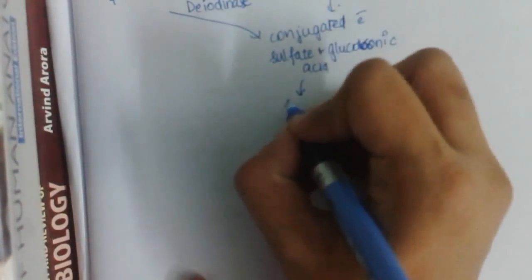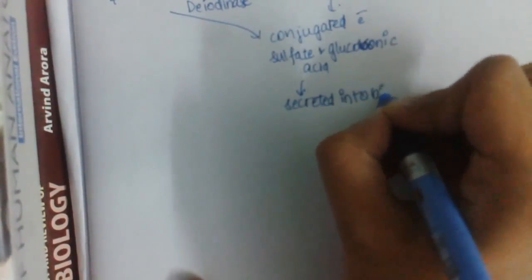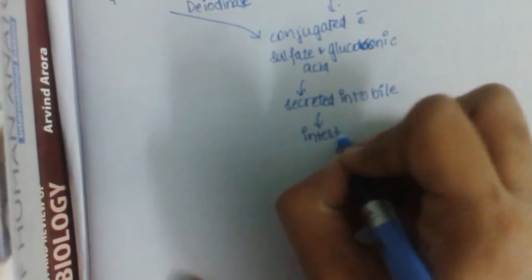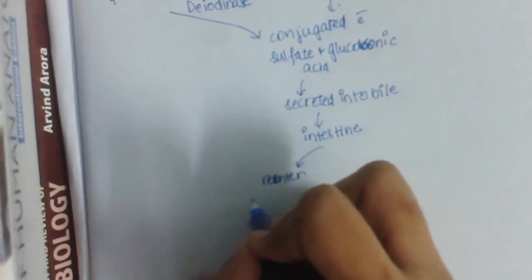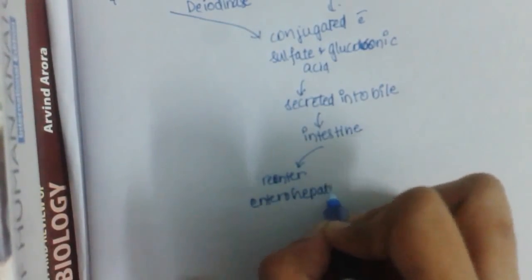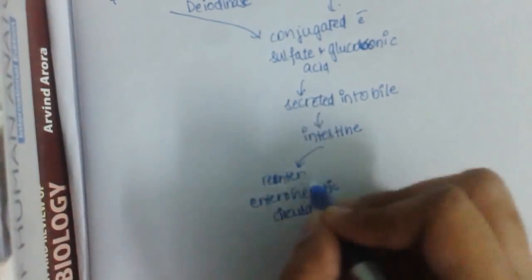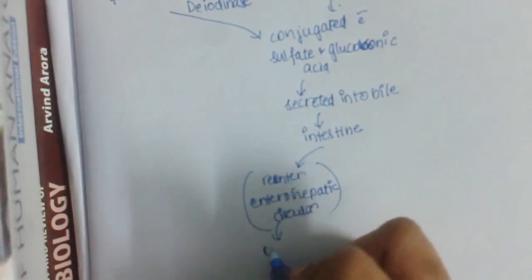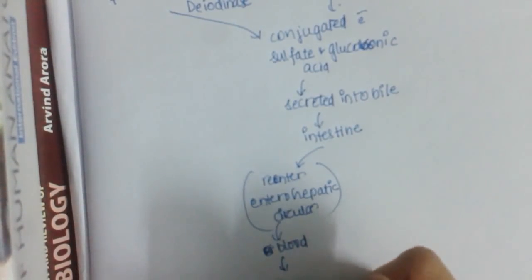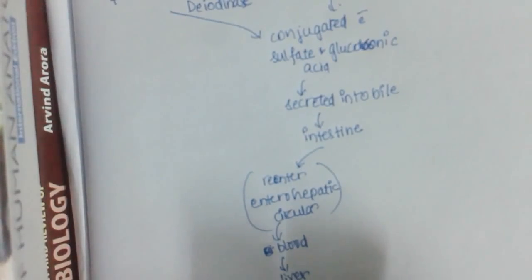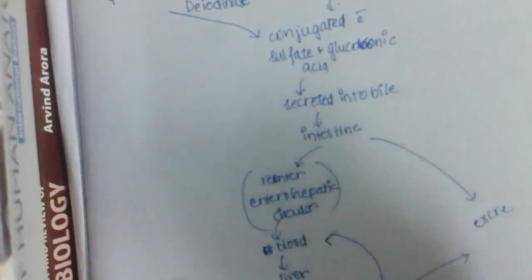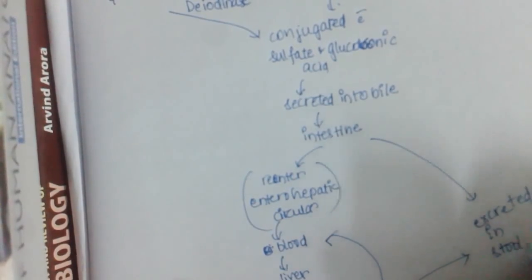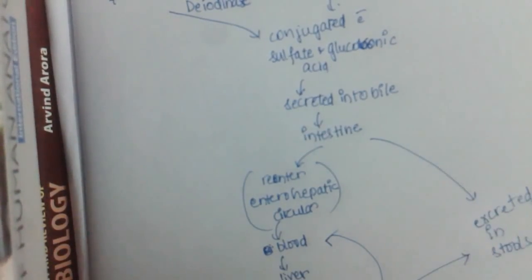These conjugated forms are secreted into bile. From bile, they enter the intestine, and then there are two pathways: one, they may re-enter enterohepatic circulation — absorbed from the intestine into the systemic blood, then returned to the liver, and from the liver back into bile and then back to the intestine. Finally, they may be excreted in stool. This is the degradation pathway of thyroid hormone.